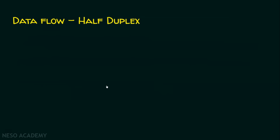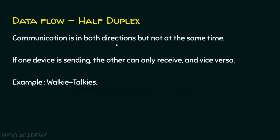Coming to the half duplex, the communication is in both directions — it can send as well as receive, but not at the same time. The very important part about half duplex is that communication can happen in both directions, but not at the same time. If one device is sending, the other device can receive, but both sending and receiving cannot happen simultaneously. Example: walkie-talkie. We can talk as well as listen, but we can't talk and listen at the same time.